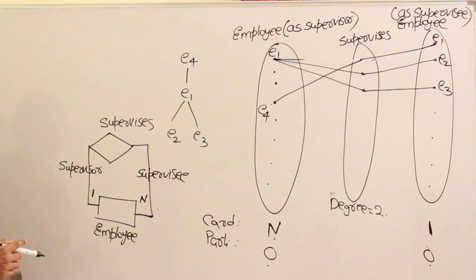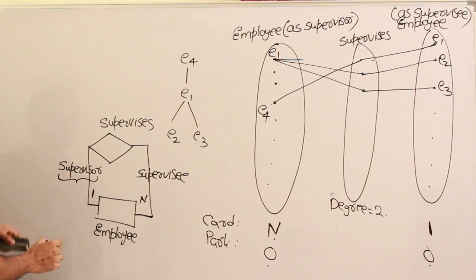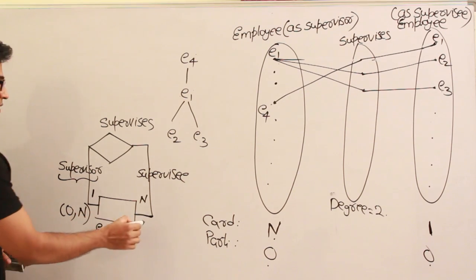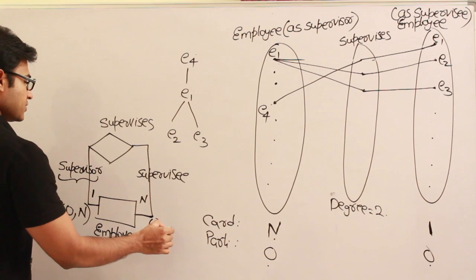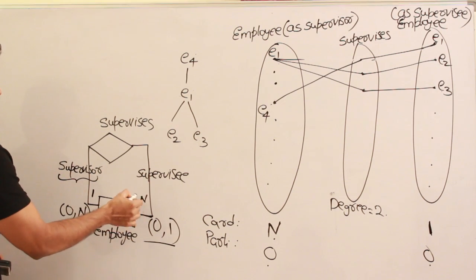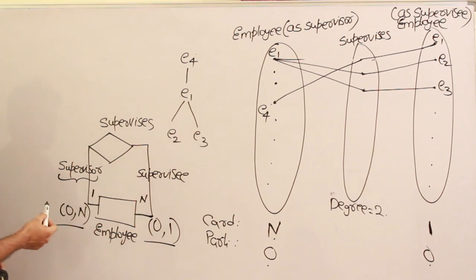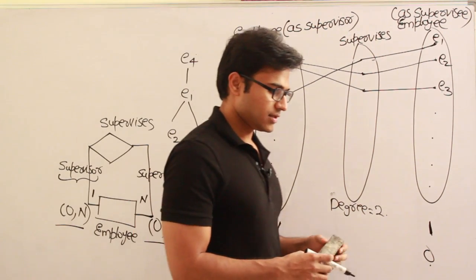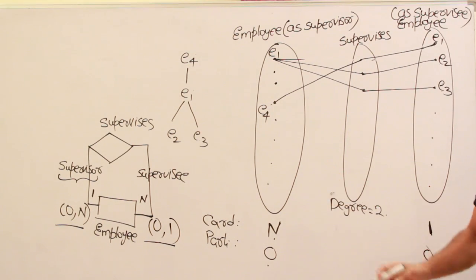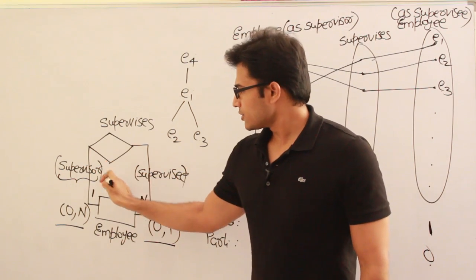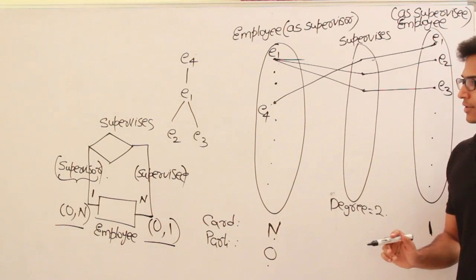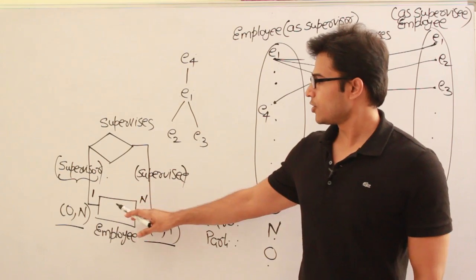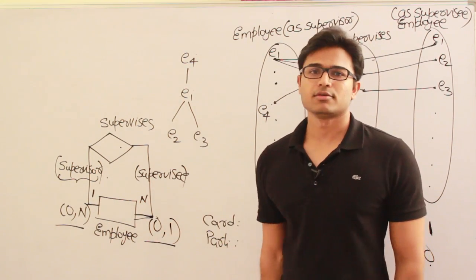In min-max representation: on the supervisor side, the minimum is 0 and the maximum is N. On the supervisee side, the minimum is 0 and the maximum is 1. Since there is no total participation on either side, we use single lines. These roles — supervisor and supervisee — are also represented in the ER diagram, which makes it a bit different from ordinary binary relationships. But it is still a binary relationship, and it is called a recursive relationship. Even though it is called recursive, it is still binary, because only two entities participate in every relationship.